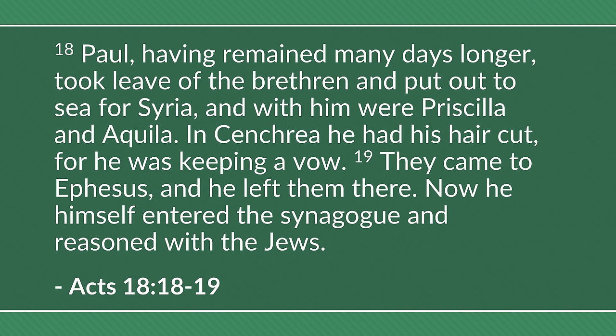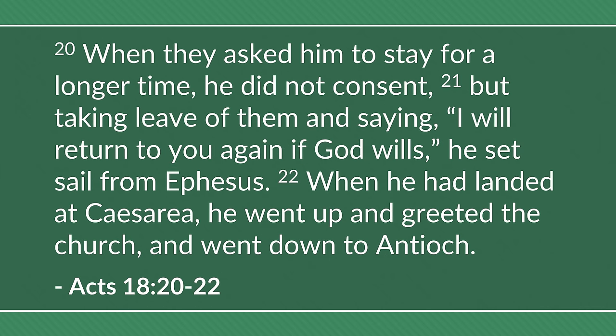They all took hold of Sosthenes, the leader of the synagogue, and began beating him in front of the judgment seat, but Gallio was not concerned about any of these things. Paul, having remained many days longer, took leave of the brethren and put out to sea for Syria, with Priscilla and Aquila. In Cenchrea he had his hair cut, for he was keeping a vow. They came to Ephesus and he left them there. He reasoned with the Jews in the synagogue, then set sail from Ephesus and landed at Caesarea, greeted the church, and went down to Antioch.